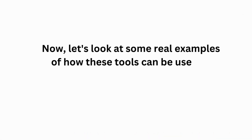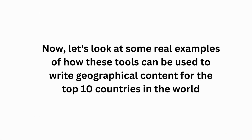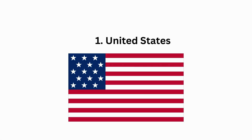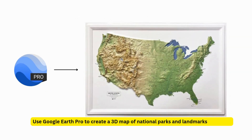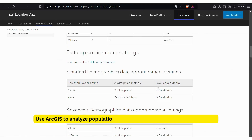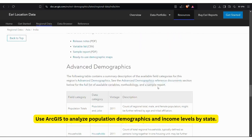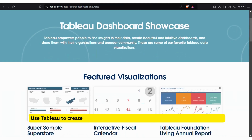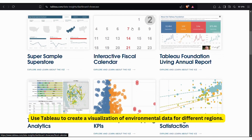Now let us look at some real examples of how these tools can be used to write geographical content for the top 10 countries in the world. For the United States, use Google Earth Pro to create a 3D map of the national parks and landmarks. Use ArcGIS to analyze population demographics and income levels by state. Use Tableau to create a visualization of environmental data for different regions.